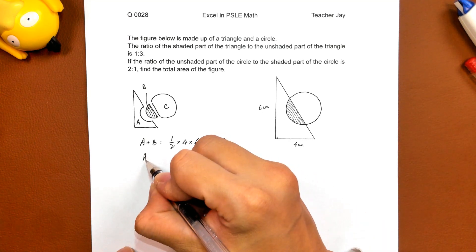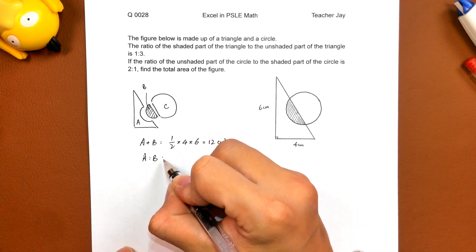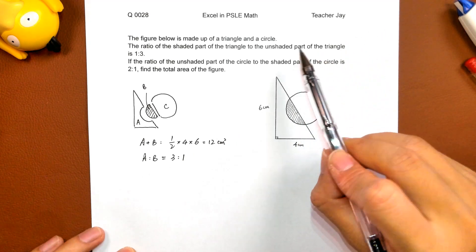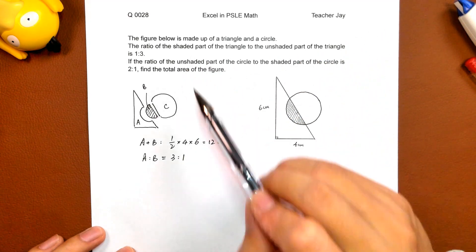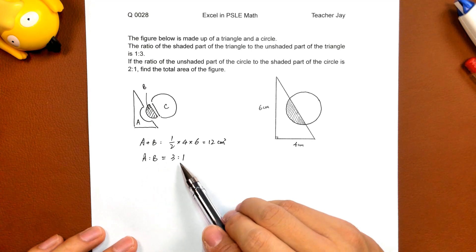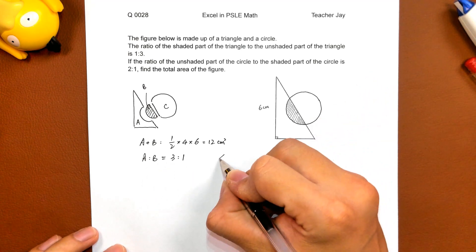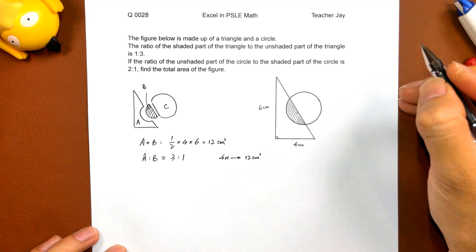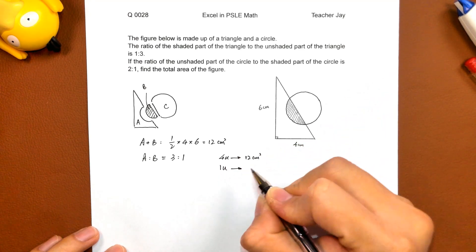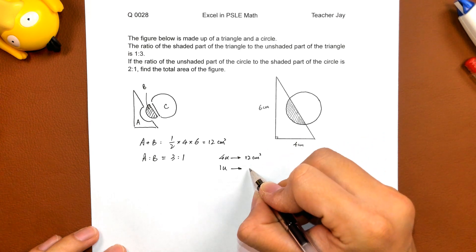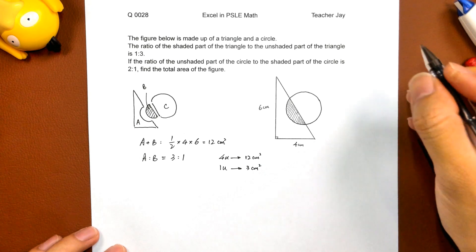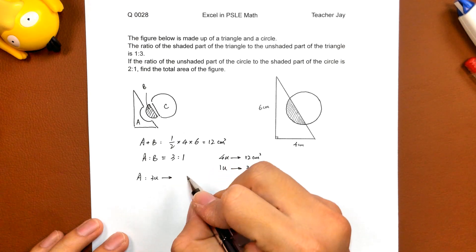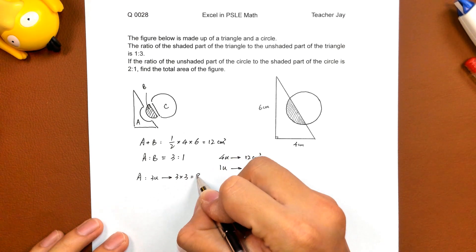And A to B, as we know from the question, A to B equals 3 to 1, because A is unshaded, B is shaded, 3 to 1. That means 4 units of the figure, 12 square centimeters. 1 unit of it, 12 divided by 4, 3 square centimeters. That means A, 3 times 3, 9 square centimeters.